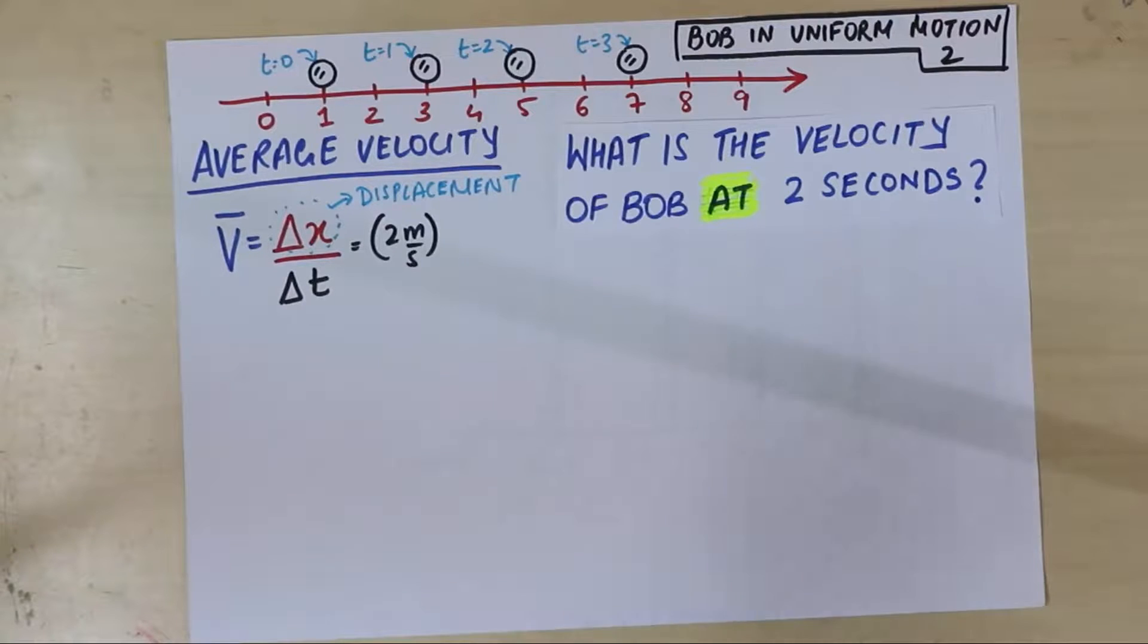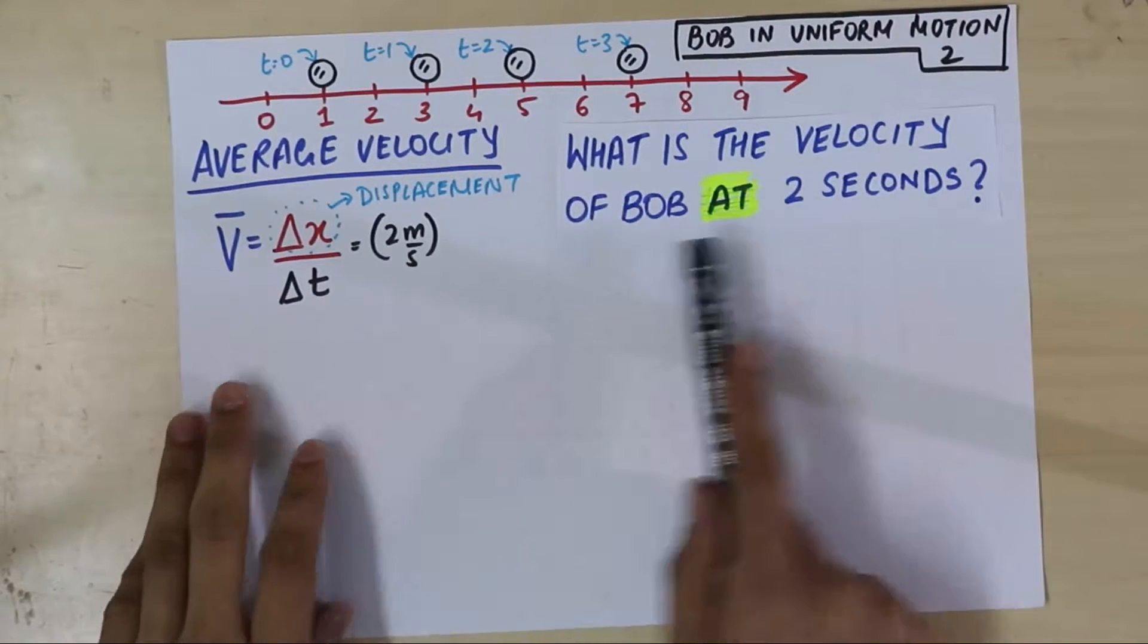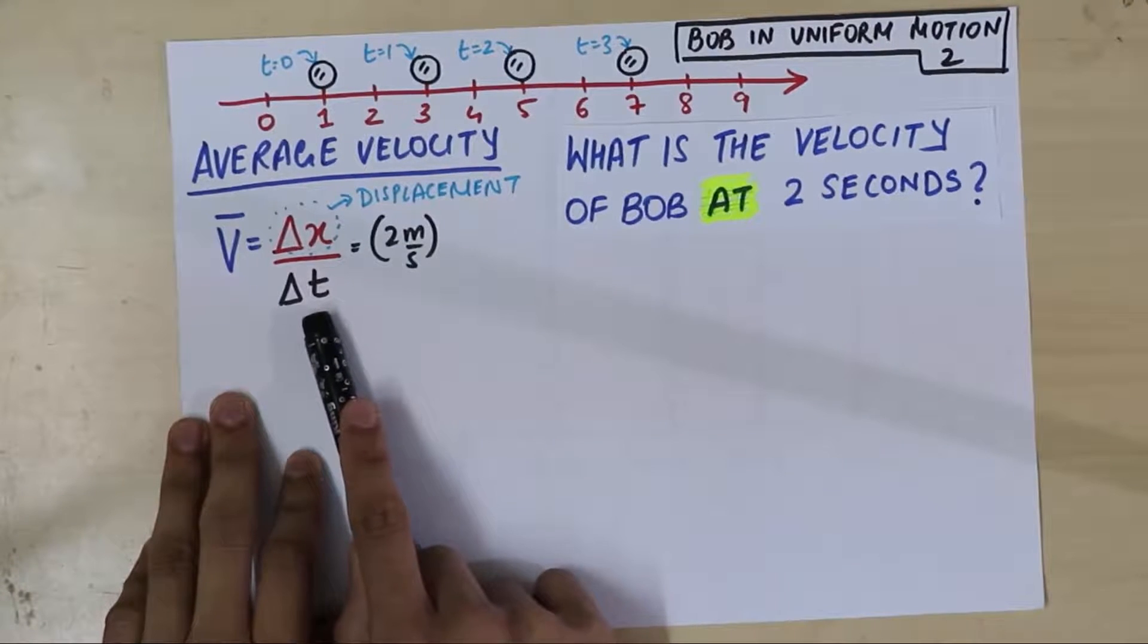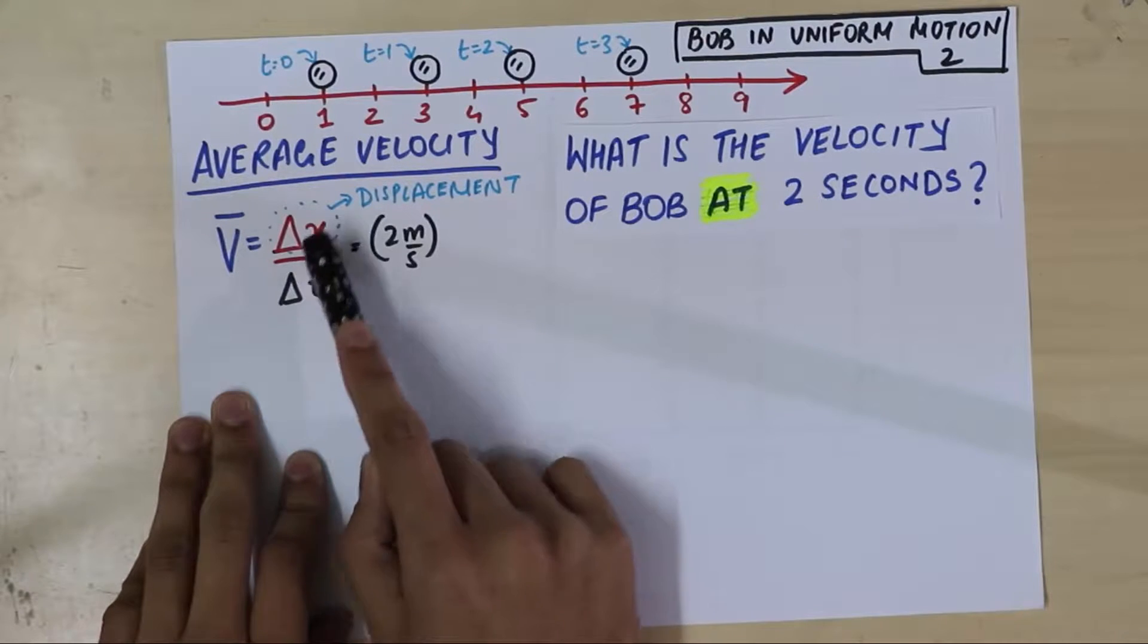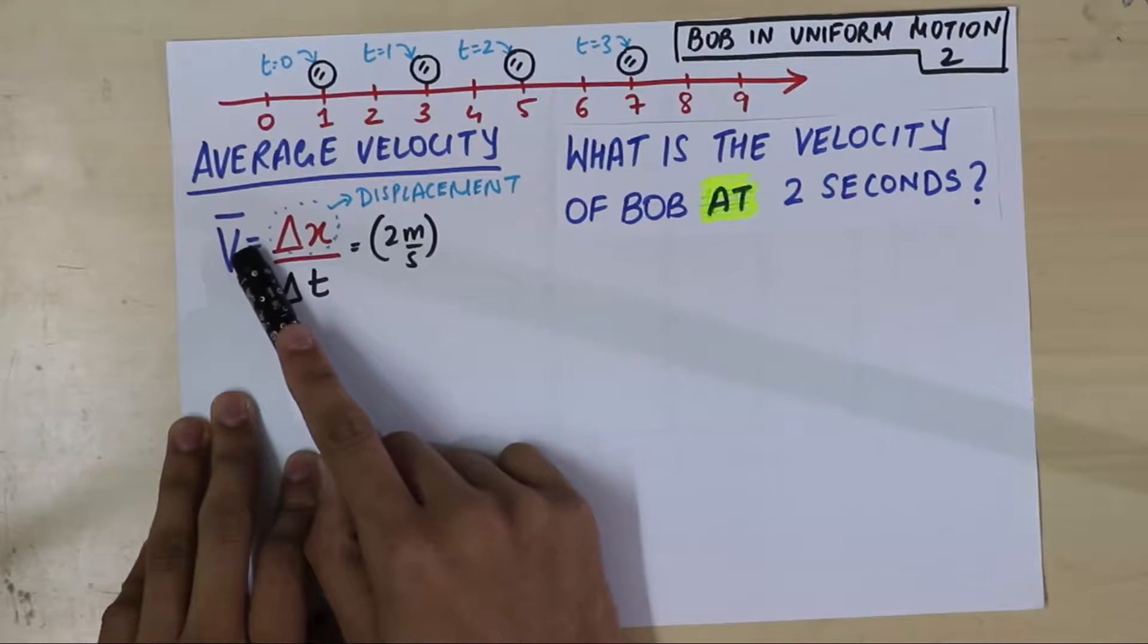What does that mean? I am not giving you any time interval, I am asking you at 2 seconds. So far, all you know to calculate is if I give you some time interval, then over that time interval you can calculate the change in position, take the ratio and you can calculate the average velocity.